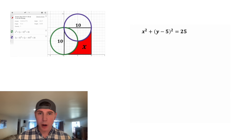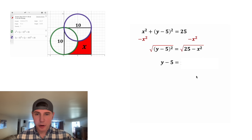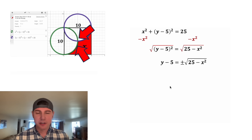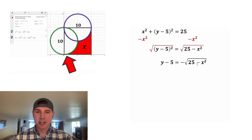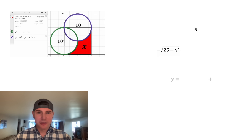In order to use calculus, we need to rewrite this where we have y in terms of x — we want to get the y by itself. We subtract x squared from both sides to get y minus 5 squared equals 25 minus x squared, then square root both sides. We get y minus 5 equals plus or minus the square root of 25 minus x squared. We're only interested in the bottom part of the circle because the top doesn't touch our red region, so we use the minus: y equals 5 minus the square root of 25 minus x squared.